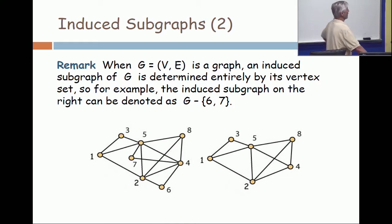when I specify that G is this graph on the left, then I can completely be precise in my meaning of the subgraph on the right just by specifying the vertex set. So I can say, take the graph G and remove vertices 6 and 7. Now when you remove vertices 6 and 7, you remove all edges incident with either of those two vertices.